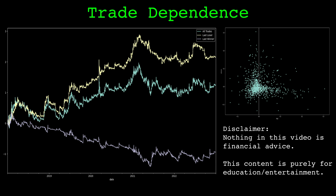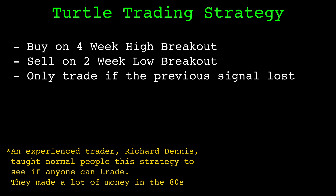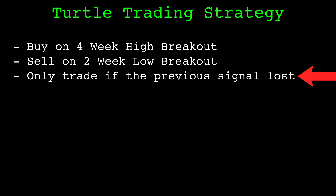In this video we will look into trade dependence. Trade dependence is when a strategy's trades have different performance given the outcome of previous trades. A famous example of trade dependence being used is from the turtle trading strategy. It was a channel breakout trend following strategy. Google turtle traders if you're unfamiliar. One of the rules they used was to only take a trade if the previous trade signal was a losing signal.